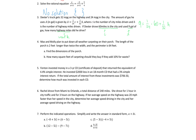1 over 24 times 60 gives us 2 and a half. I'll subtract 2 and a half over, so 9 minus 2 and a half is 6 and a half. Then I'll multiply each side by 32, and I got 208 equals H. Since it's a word problem, we'll answer in word form: he drove 208 highway miles.